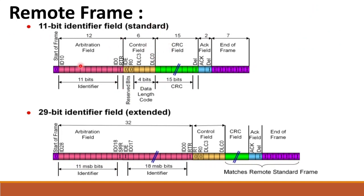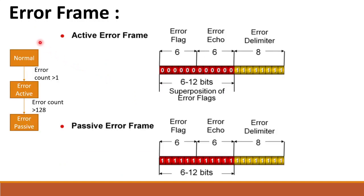We will now discuss about the error frame. We have two types of error frames: one is the active error frame and another is the passive error frame. If my controller state is error active, I will be sending the active error frame. If my CAN controller or CAN node is in error passive state, I will be sending the passive error frame. We will discuss more on when a CAN node moves to different states.